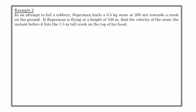Here's another example. In an attempt to foil a robbery, Superman, in uncharacteristically mean form, hurls a 0.5 kilogram stone at 200 meters per second towards a crook on the ground. If Superman's flying at a height of 350 meters, find the velocity of the stone the instant before it hits the 1.5 meter tall crook on the top of his head. Here's our situation. We've got Superman up top. He throws a stone. It's going to hit this crook in the head. The mass of the stone is 0.5 kilograms. Its initial velocity is 200 meters per second. Superman's height, where he releases the stone, is 350 meters above the ground. It's traveling to a location where it hits this very tall crook at 1.5 meters, because it hits him on the top of his head.